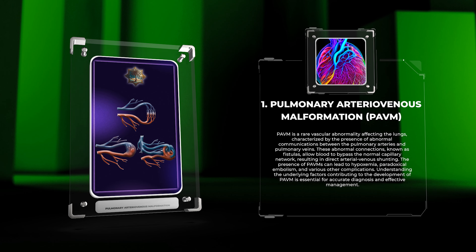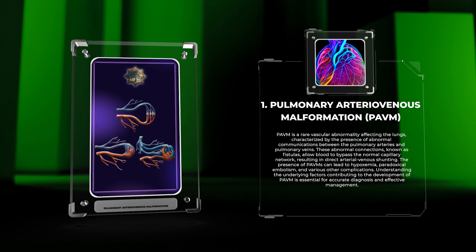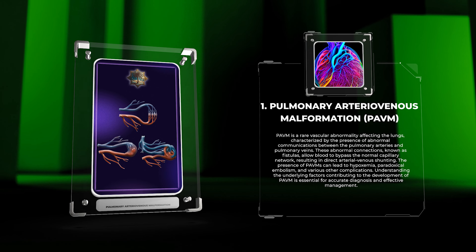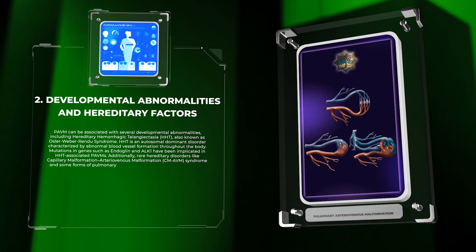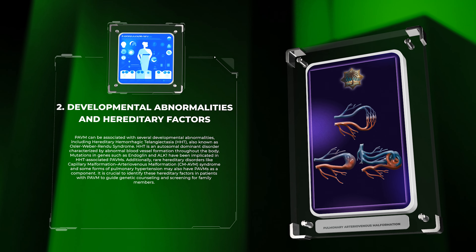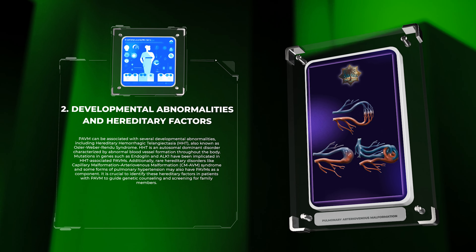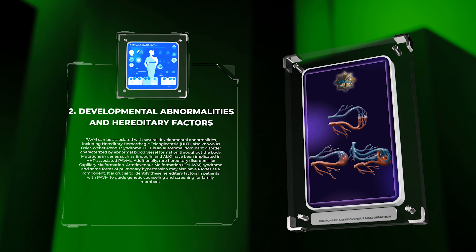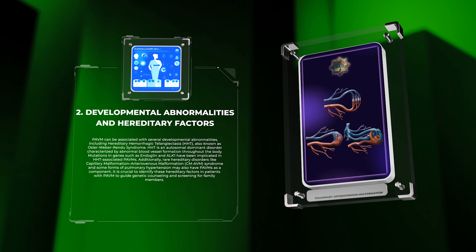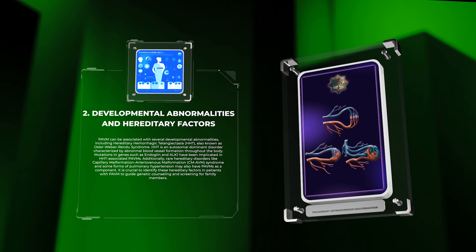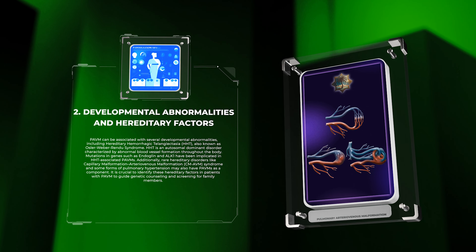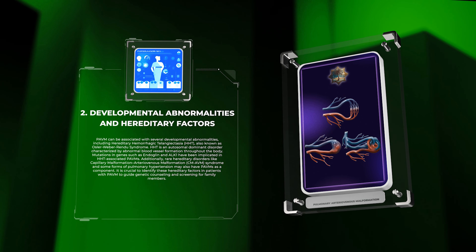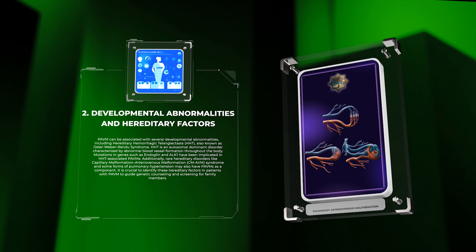Understanding the underlying factors contributing to the development of PAVM is essential for accurate diagnosis and effective management. PAVM can be associated with several developmental abnormalities, including hereditary hemorrhagic telangiectasia, HHT, also known as Osler-Weber-Rendu syndrome. HHT is an autosomal dominant disorder characterized by abnormal blood vessel formation throughout the body. Mutations in genes such as endoglin and ALK1 have been implicated in HHT-associated PAVMs.